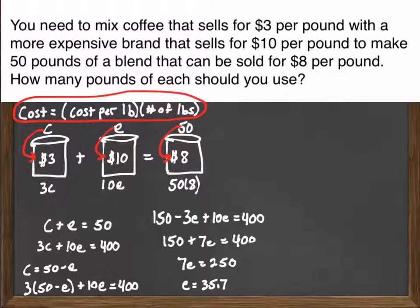Here I need to round off. And typically these problems will tell you exactly what to round to. Here I'm just going to round to the nearest tenth. I get 35.7. Once I know that I need 35.7 pounds of the expensive stuff,